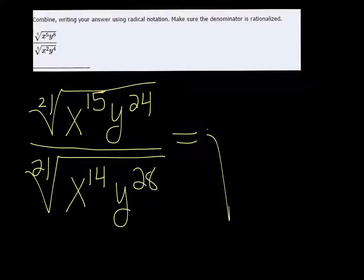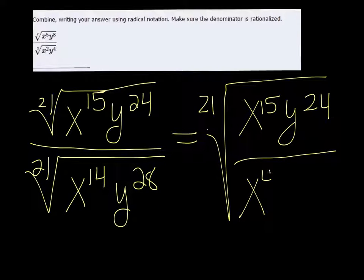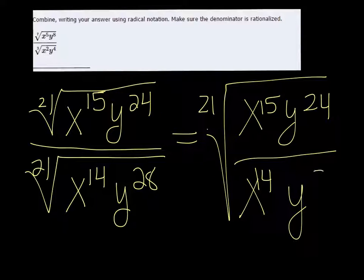Since now they both have the same radicand, we can make it all one big radical of x to the 15th y to the 24th on top. And x to the 14th y to the 28th on the bottom.